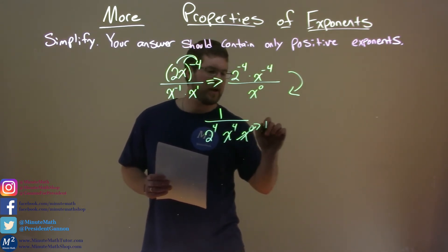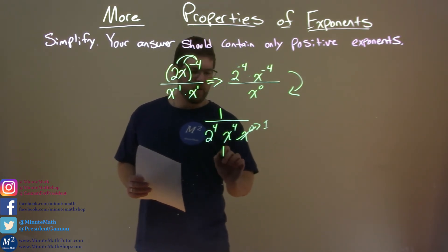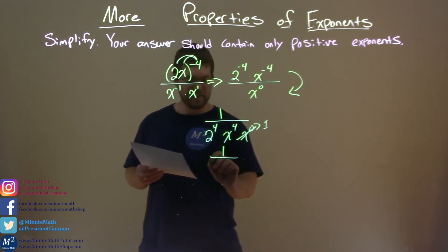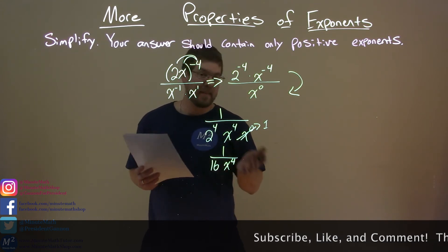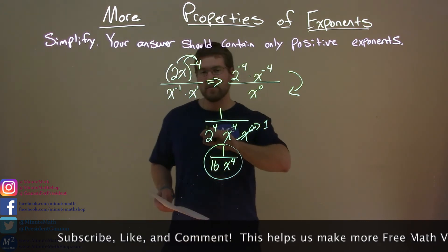That x to the zero power we know is just one, so we don't really need to write that. And now let's keep simplifying. We have one over two to the fourth power. Well, two to the fourth power is 16. So we have 16 here. We have x to the fourth power, just what's left over, and then we're done. That is our final answer. One over 16x to the fourth power.